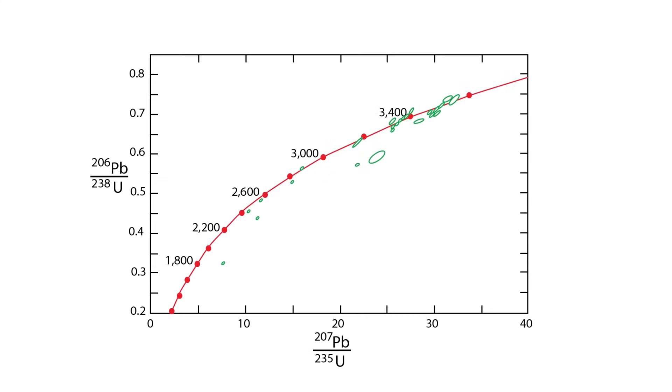The zircons from the Minnesota River Valley rocks have been through a lot. The concordia plot shows this complicated history. Many zircon analyses fall below the concordia curve. Their ages can be recovered if it is assumed that lead loss happened in one episode. In that case, straight lines through the analyses intersect the concordia at the time the zircons grew.